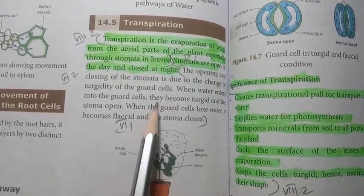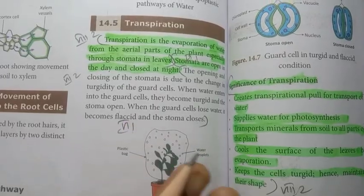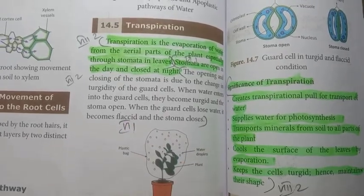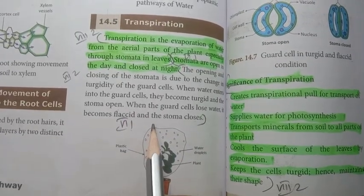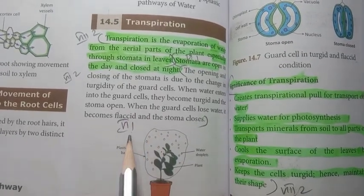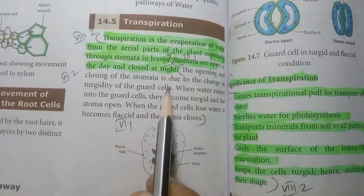My suggestion: write as points. For Roman number 6, first question answer, write 3 points as your answer.